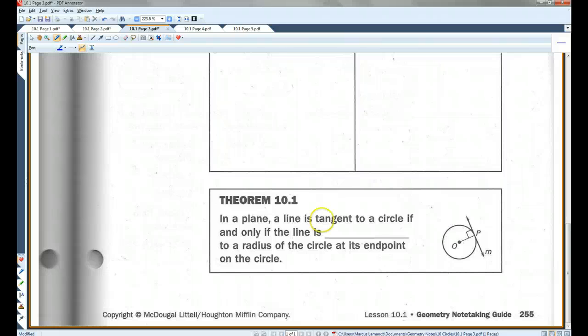In a plane, a line is tangent to a circle if and only if the line is perpendicular to a radius of the circle at its endpoints on the circle. So, if you have a radius and you have a tangent and they intersect, they're going to be perpendicular. They're going to make a right angle. Always.